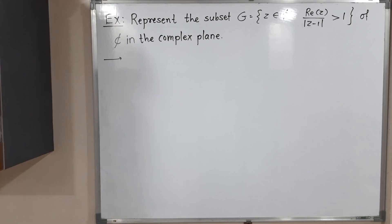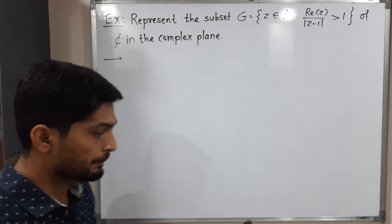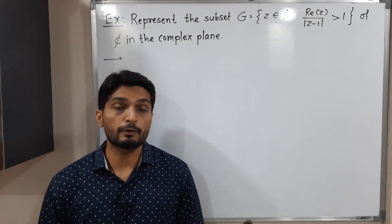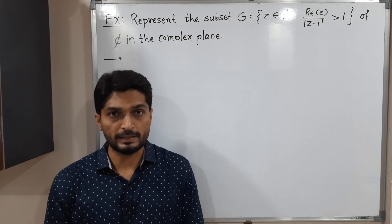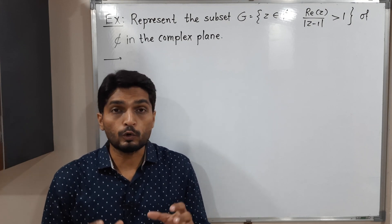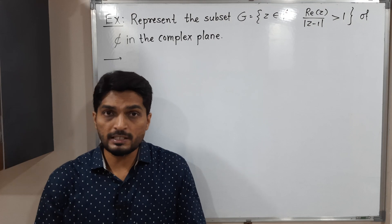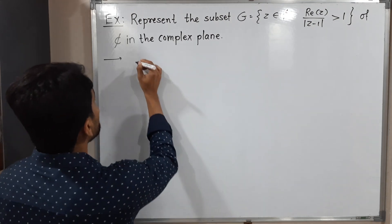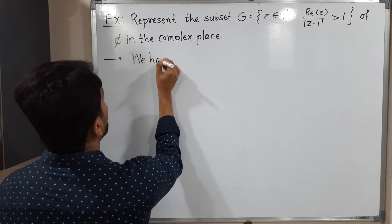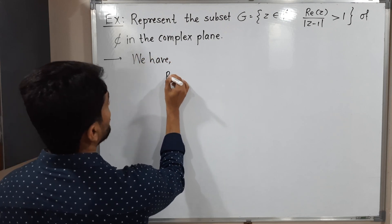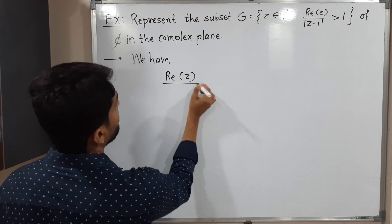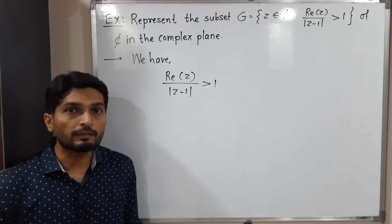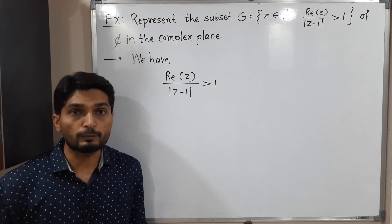In this video we are going to discuss this example. We have set G which is a subset of the set of complex numbers, and we have to represent it in the complex plane. G is the set of all complex numbers satisfying this condition: the real part of z divided by the modulus of z, minus one, is greater than one.